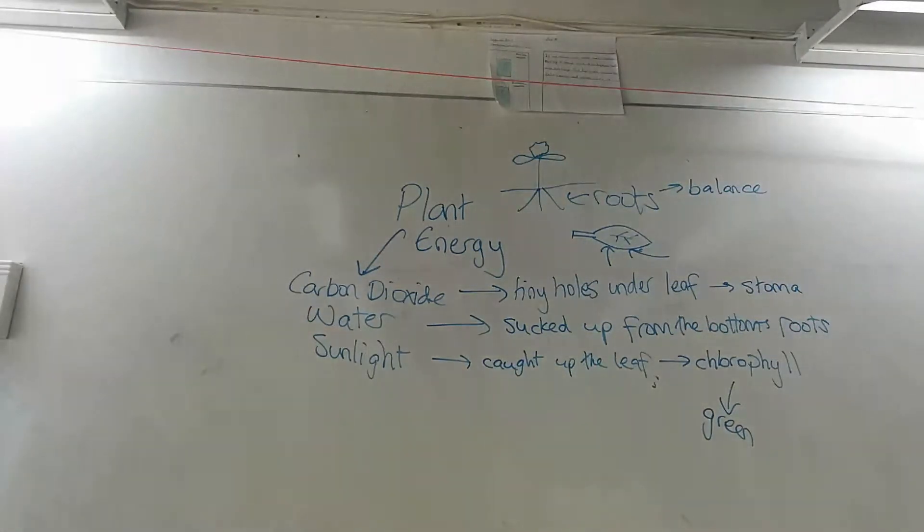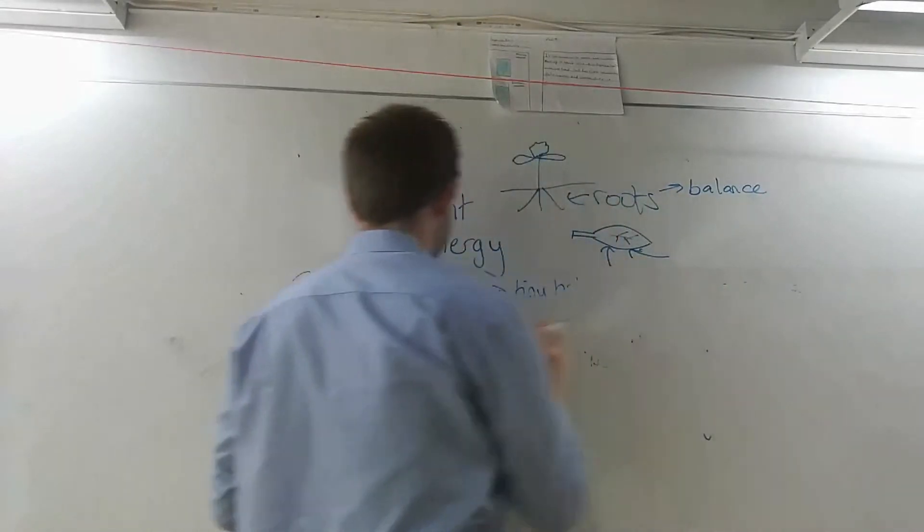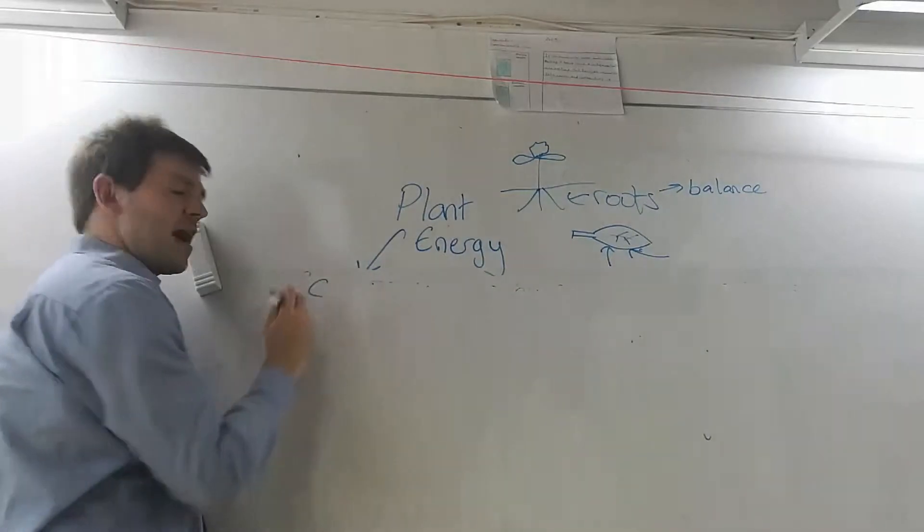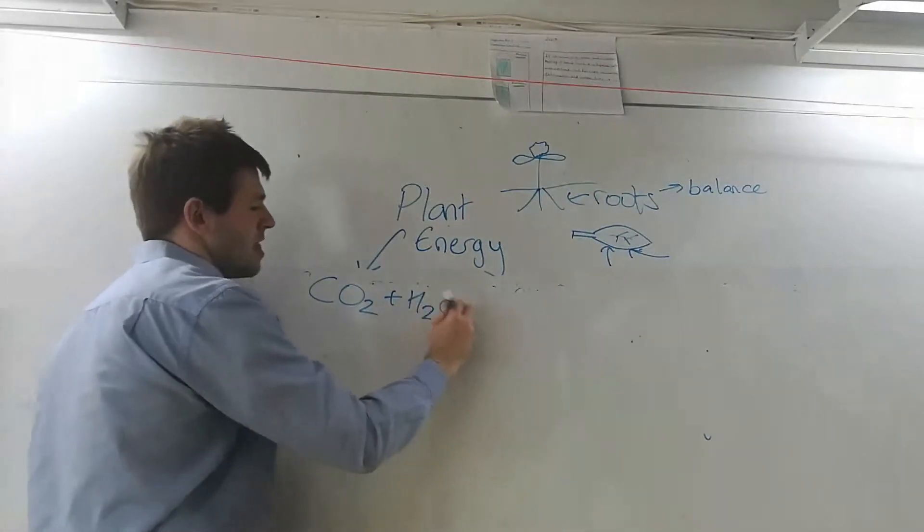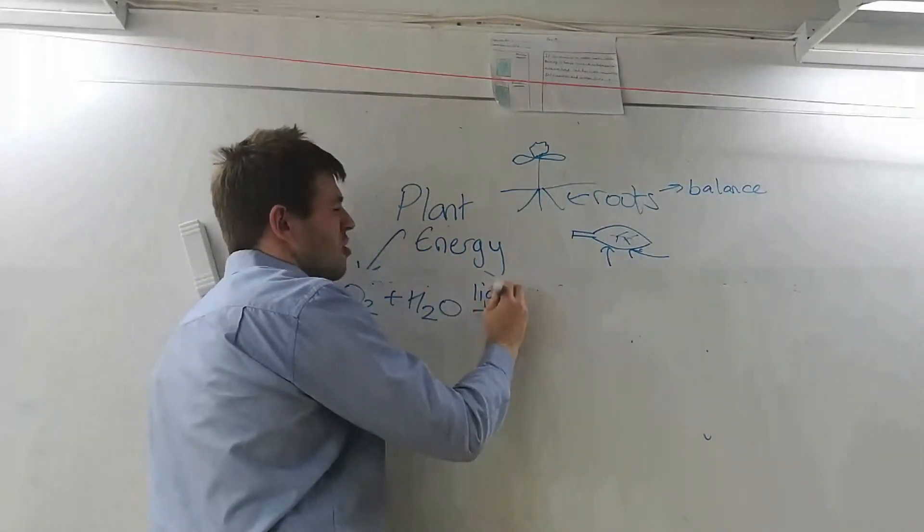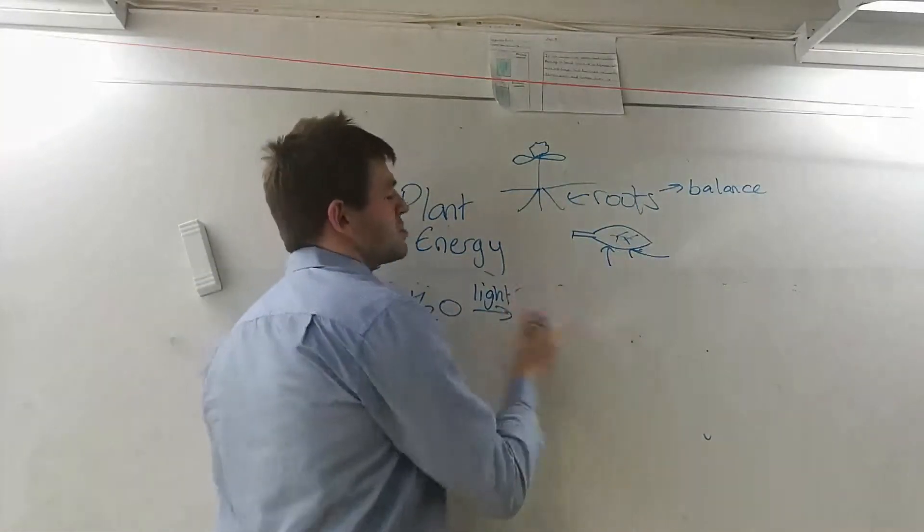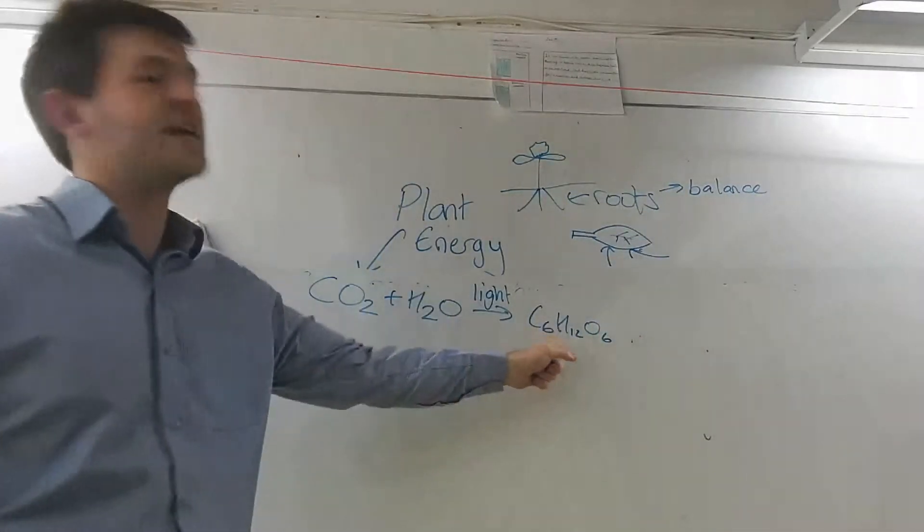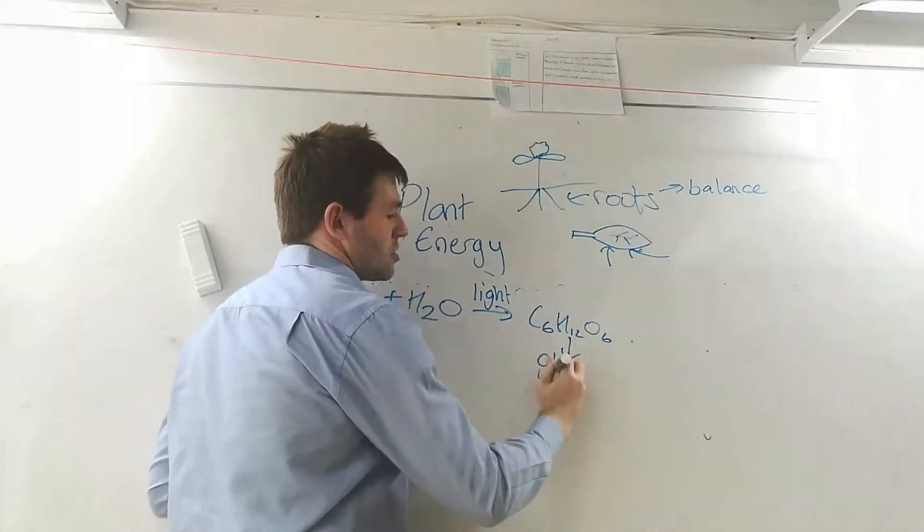Those three things have to come together. With those three things there's a chemical reaction that happens in the leaf, and I can write it in chemicals. I'm sure I have the CO2, the water, and the light. Remember light is not a thing, it's not an atom or anything, so I write light separately over the arrow. And that comes to two different things. One here is really complex: C6H12O6. You don't need to know that, you need to know that is called glucose.